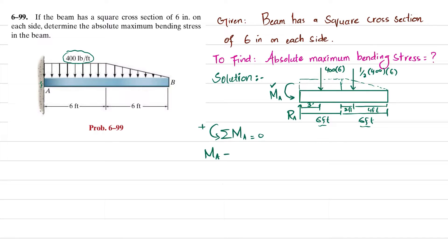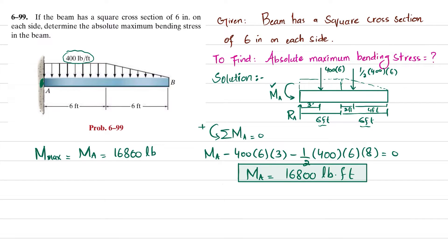About point A, we have the external moment M_A, which is counterclockwise, so positive. The second moment is due to the load 400 times 6, with perpendicular distance 3 feet, producing clockwise movement, so negative: minus 400 times 6 times 3. The third moment is due to the triangular load: minus 1/2 times 400 times 6 times the perpendicular distance of 8 feet, equal to zero. When you calculate, the reaction moment at point A comes out to be 16,800 pound-feet. This moment is the maximum moment because in a cantilever beam, maximum moment occurs at the fixed end.